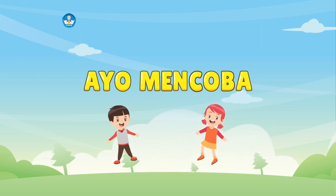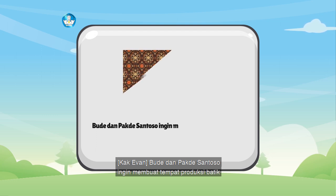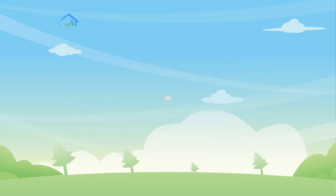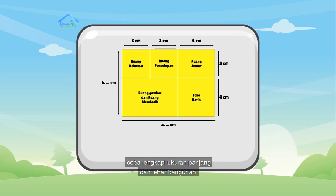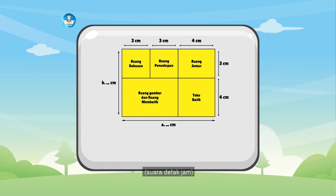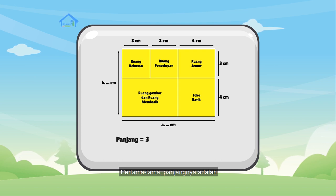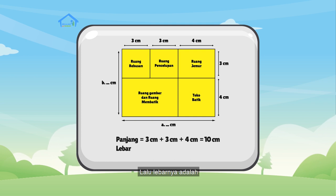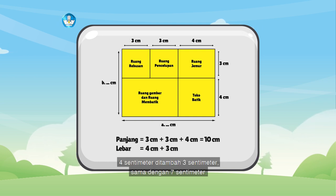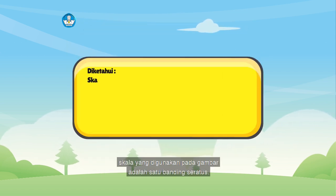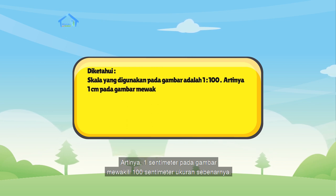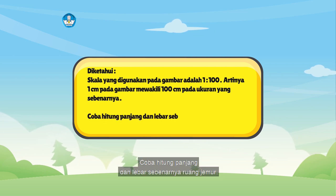Ayo, main coba! Bu dan Pak Santoso ingin membuat tempat produksi batik yang sekaligus ada tokonya. Berikut denah tempat produksi batik Pak Santoso. Pada denah ini, coba lengkapi ukuran panjang dan lebar bangunan. Tuliskan hasilnya di buku kalian ya. Sekarang, kita cek jawaban kita sama-sama ya. Panjangnya adalah 3 cm ditambah 3 cm ditambah 4 cm sama dengan 10 cm. Diketahui, skala yang digunakan pada gambar adalah 1 banding 100. Artinya, 1 cm pada gambar mewakili 100 cm ukuran sebenarnya. Coba hitung panjang dan lebar sebenarnya ruang jemur.